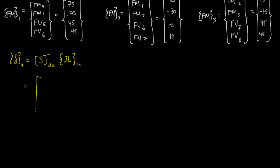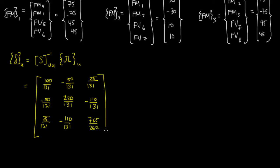Here we'd have 190 over 131, negative 50 over 131, negative 50 over 131, 220 over 131, negative 110 over 131, negative 110 over 131, 765 over 262, and this would be 1 over EI, right? Because we inverted the matrix.